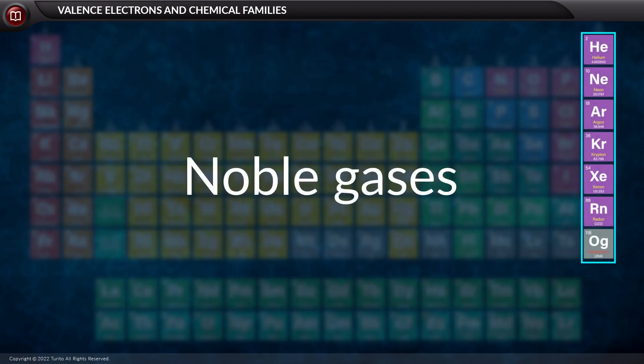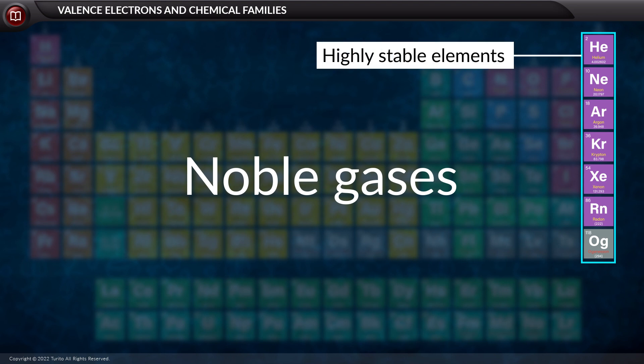Also, to speak about noble gases, the group 18 elements of the long form of the periodic table are highly stable elements. They are reluctant to react in a condition where other elements can readily react.